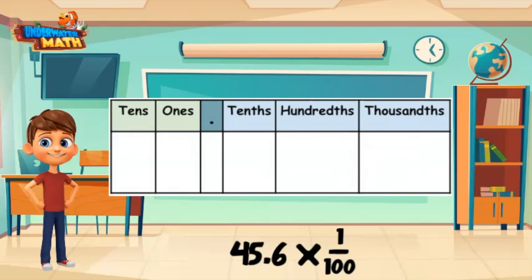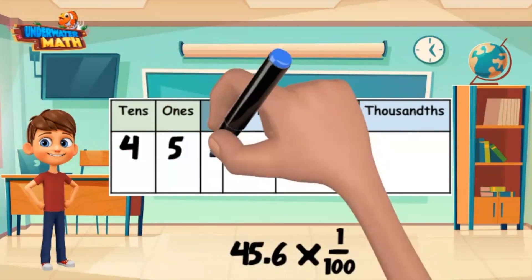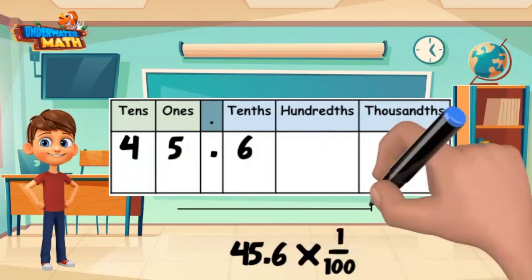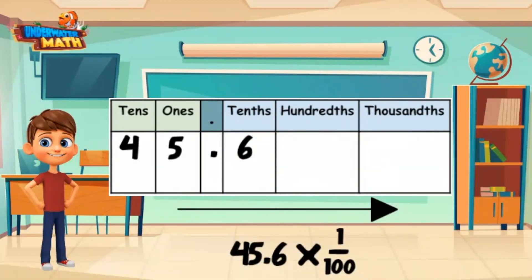Let's reset our number and give it a try. We start with 45.6 and multiply by one-hundredth. We are going to shift our digits two place values. We end up with the number 0.456. Nicely done.